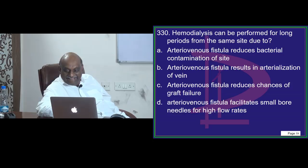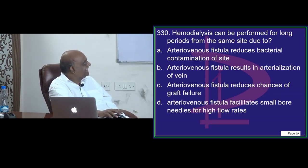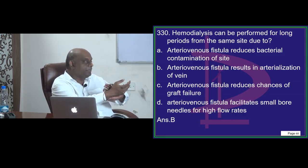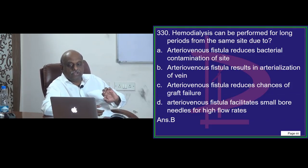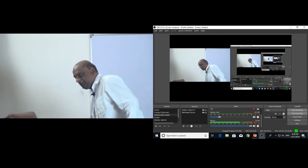Hemodialysis for a long period from the same site — what do you need to do? Question 330. Most of you saying B — we put an AV fistula, and that will lead to arterialization of the vein, which acts as a conduit for hemodialysis. So let us start our discussion for the day. We had been discussing endocrinology — let us become the champions. Last five years of NEET PG in endocrinology, we are going to review what has been asked.